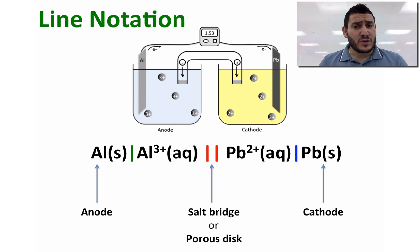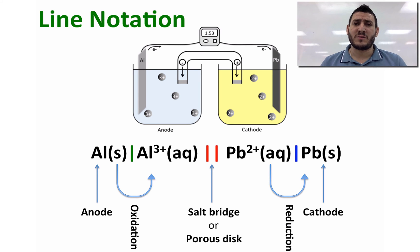Between the electrodes and the solution we put a line. Since aluminum is getting oxidized into Al³⁺, we put a line between aluminum and Al³⁺. Lead is getting reduced to lead solid and there is a line between these two.